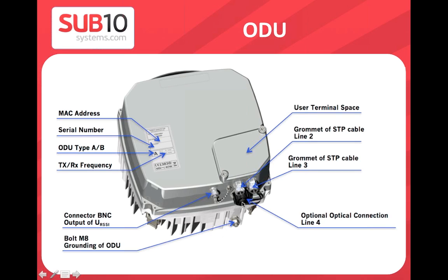The ODU has two metallic ports with cable glands, plus an optical Molex connector housing two LC connectors in a waterproof bayonet system. There is also a B and C port for connecting a voltmeter during alignment to measure receive level as DC voltage. The ODU label shows terminal A or B designation, transmit frequency, serial number, and MAC address.